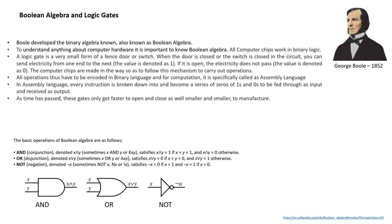In assembly language, every instruction is broken down into a series of 0s and 1s to be fed through as input and received as the output. As time passed, these gates got not only faster to open and close, but also smaller and smarter to manufacture. A simplified version and pictorial representation of Boolean algebra is shown below and the gates are also displayed here.